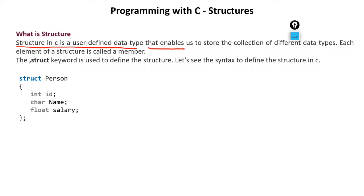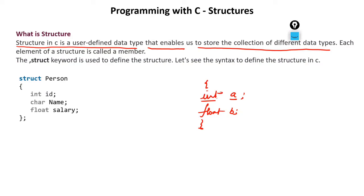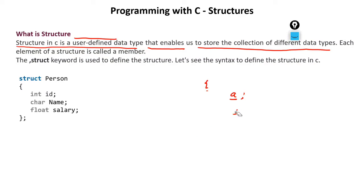Structure enables us to store a collection of different data types. For example, if you declare int A, then A is only of integer type; if you write float B, then B is only of float type. But if we make a collection of all these, we are creating a data type with more than one type — that is called a structure. Each element of a structure is called a member.